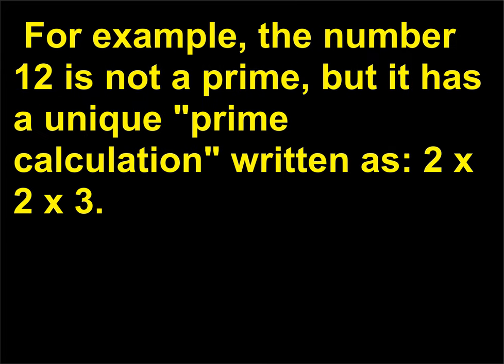For example, the number 12 is not a prime, but it has a unique prime calculation written as 2×2×3.